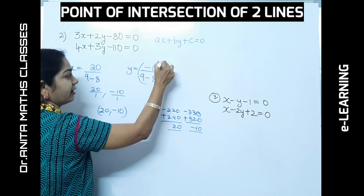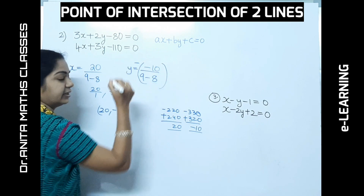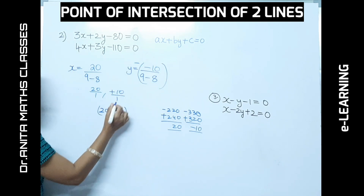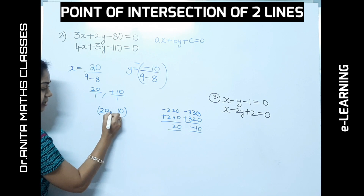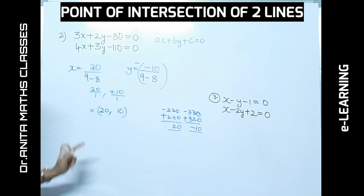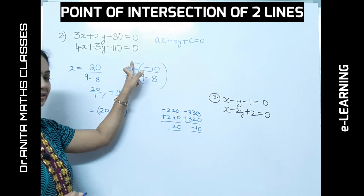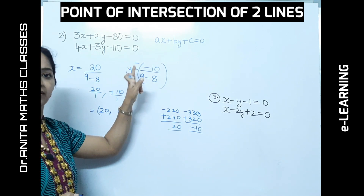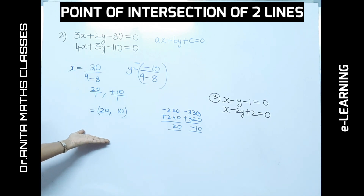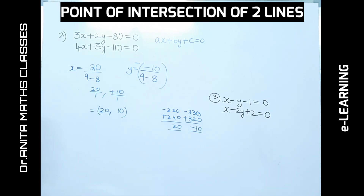The point is (20, 10). Remember to apply the negative sign for the y coordinate — since −(−10) = +10, the point of intersection is (20, 10). Do not forget to write the negative sign for y.